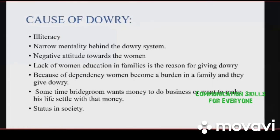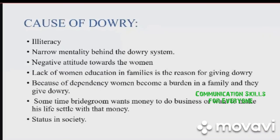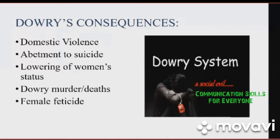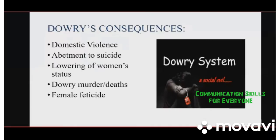Female foeticide: Some illiterate people make a decision when they come to know that it is a girl child. They think they will have to give dowry in the future, so they kill innocent girl children.